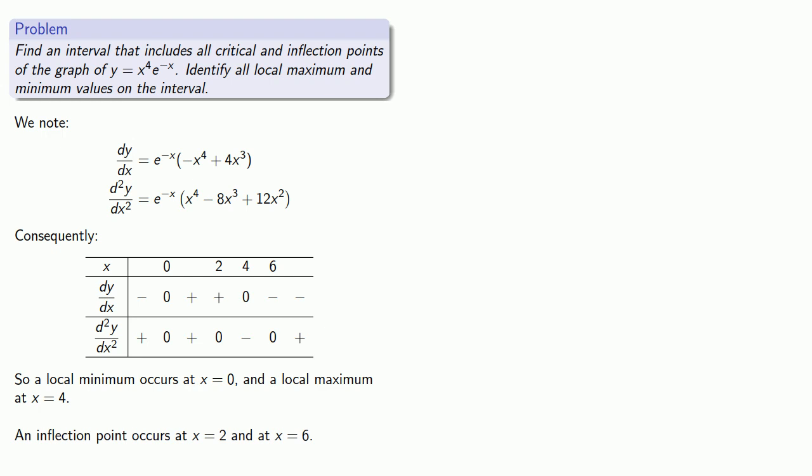So all of the interesting behavior of this graph is going to occur at x equals zero, x equals four, x equals two, and x equals six. So any interval that includes zero, four, two, and six will be good for graphing. So a suitable interval for graphing might be the interval between minus one and seven. And if we do that, our graph looks like this.